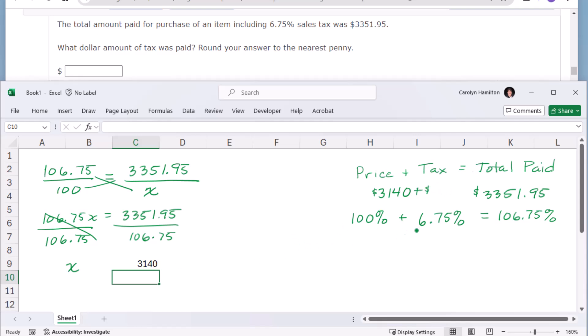Two ways you could go about that. You know that tax is 6.75% of the base, $3140. You could multiply those together. 6.75% times $3140 with an equal sign. $211.95.